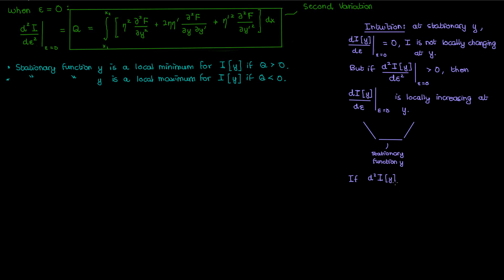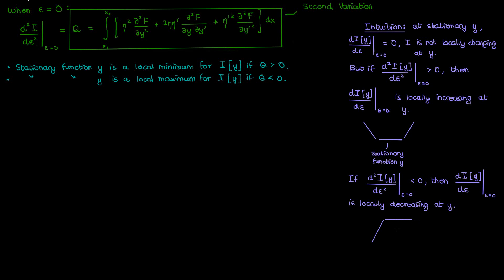If the second derivative of i with respect to ε at ε = 0 is negative at our stationary function y, then the first derivative of i at ε = 0 is decreasing at y. So we go from a positive derivative to what we know is a zero derivative — since we're at the stationary function — to a negative derivative, a decreasing functional. This looks like a local maximum, which is why a negative second variation corresponds to a local maximum.